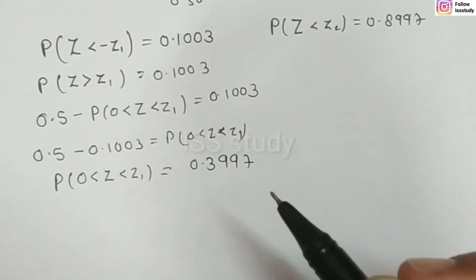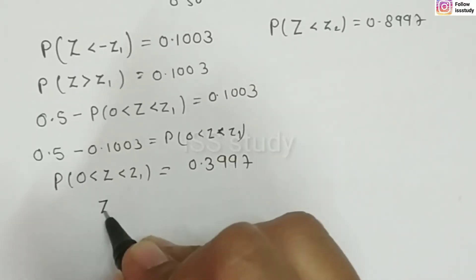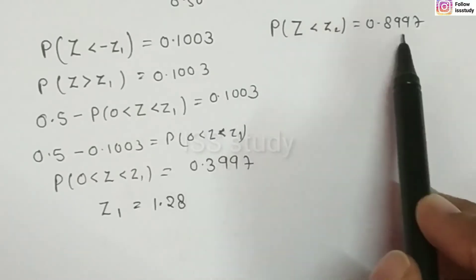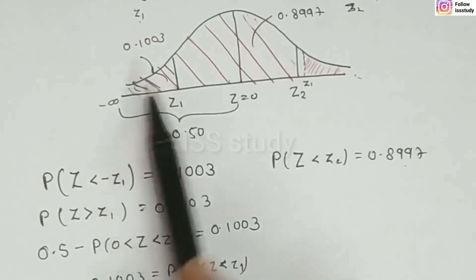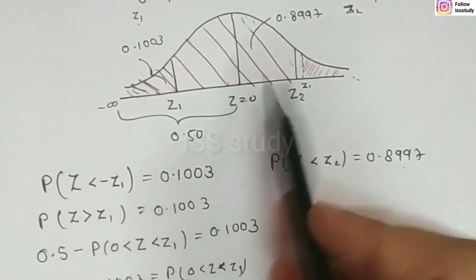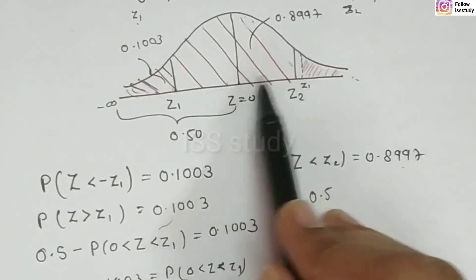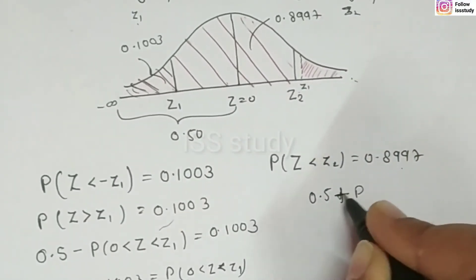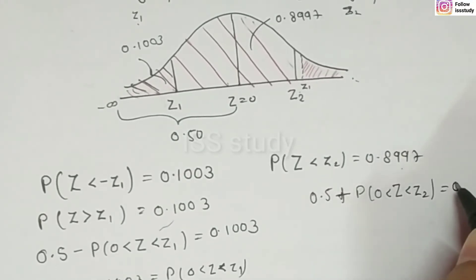When we look at the normal table, we find the Z value corresponding to the given probabilities. For Z2, the area from 0 to Z2 represents the 0.5 portion. So we can write: probability 0 is less than Z is less than Z2 equals 0.8997 minus 0.5, which gives 0.3997. Comparing this to the table, the value of Z2 is equal to 1.28.